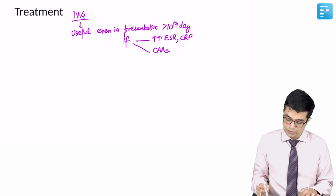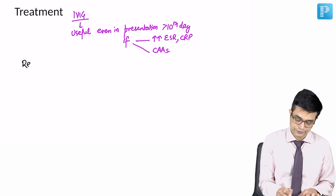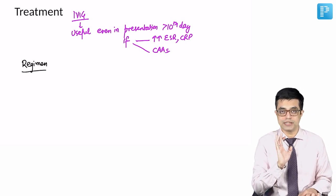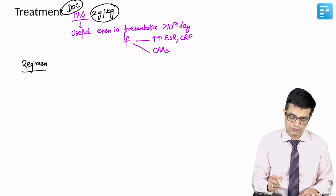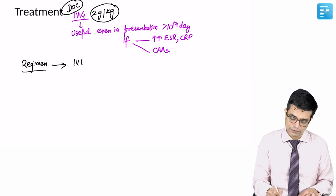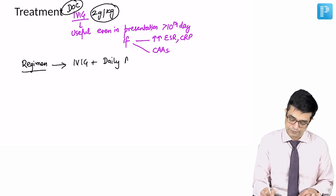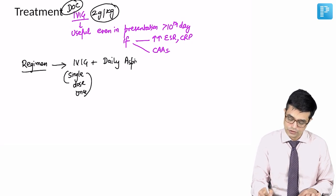Now, what is the therapeutic regime of choice? When they ask drug of choice, it is IVIG as I just said. So, IVIG is the drug of choice, dose 2 gram per kg as I just told you, single infusion. Whereas, a regime is a combination of IVIG along with daily aspirin. IVIG is given single dose only once, whereas you give daily aspirin to the patient.